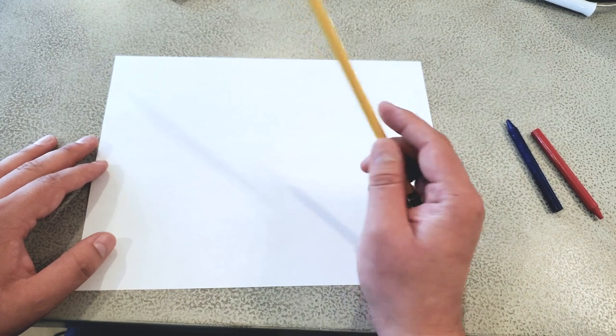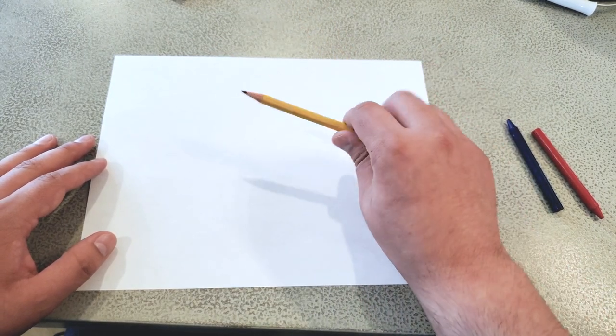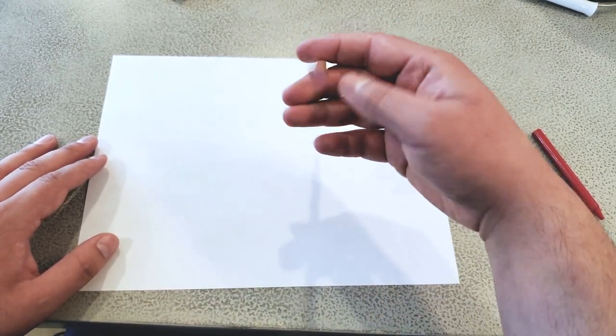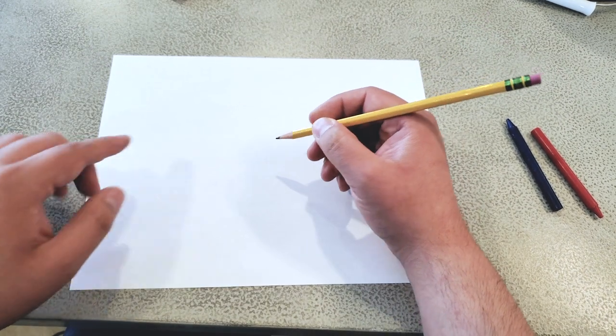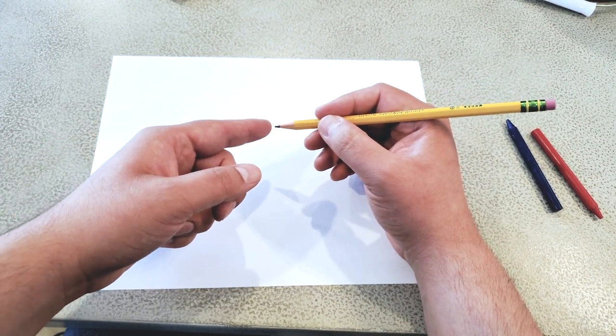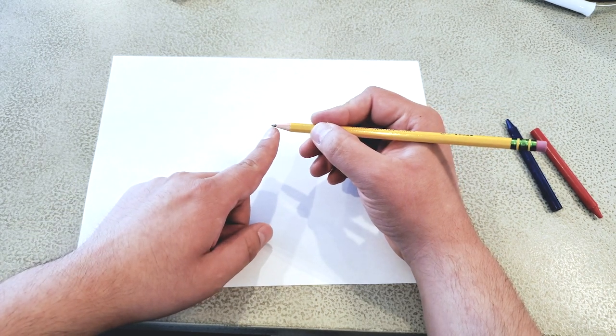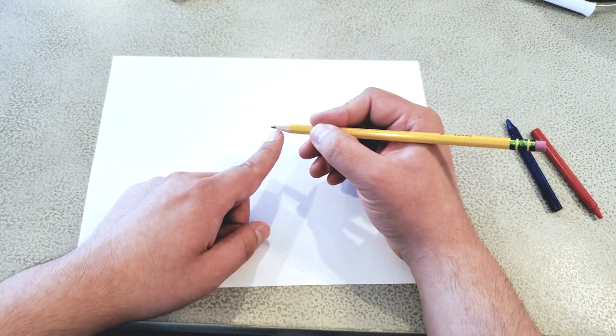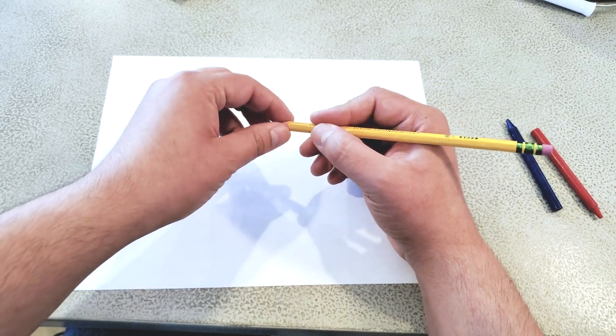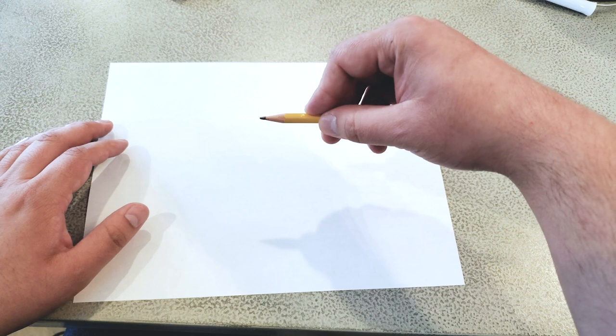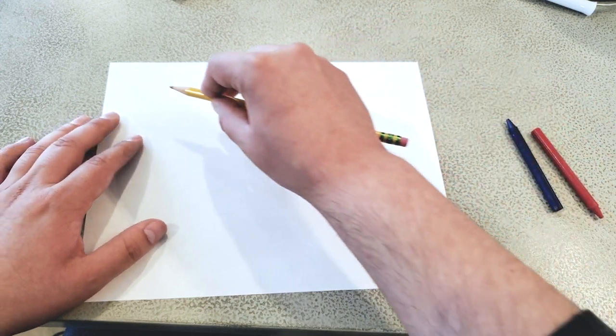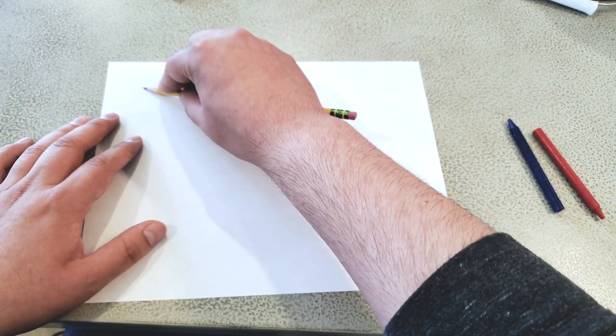How we do that is we want to hold the pencil to the side like this, not how you normally write with your pencil, because we're not using the tip of the pencil. We're using the side, this long part right here to create the texture rubbing. And the way that we can best do that is to hold our pencil with our hands on top of it and lay it down that way.